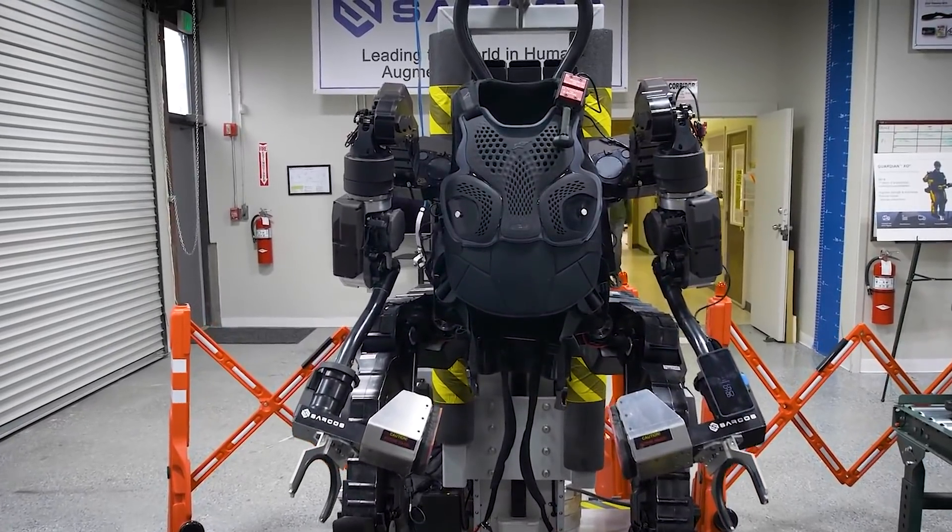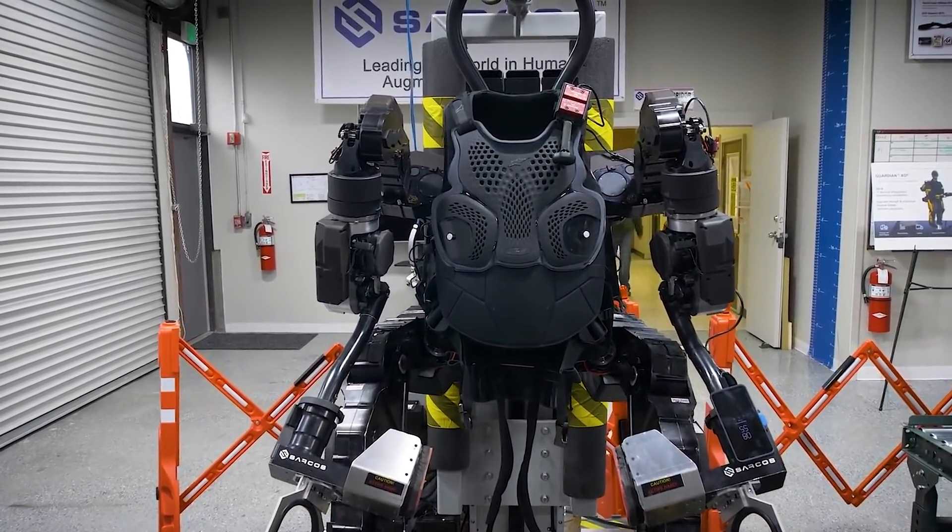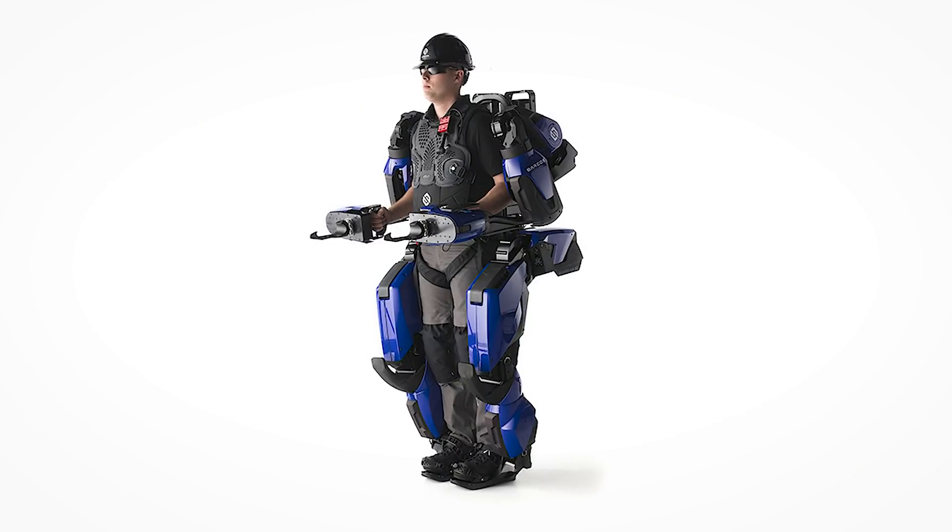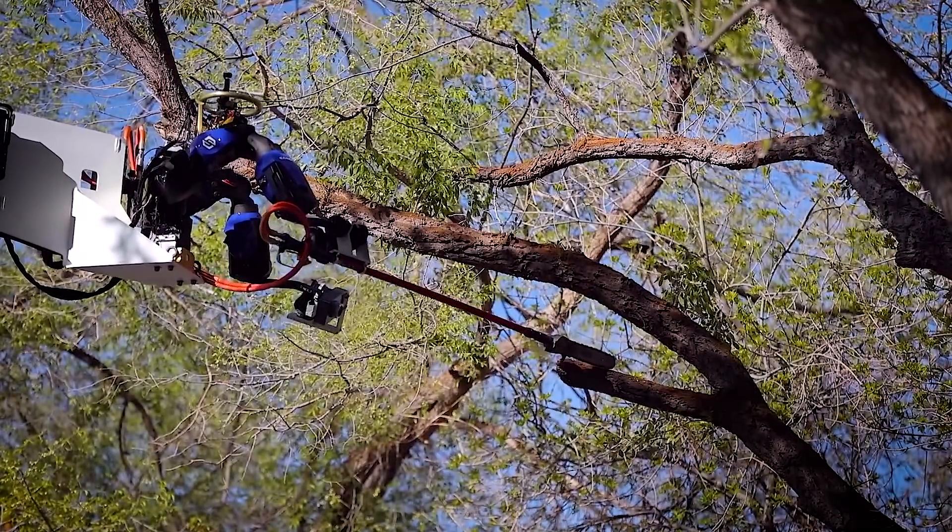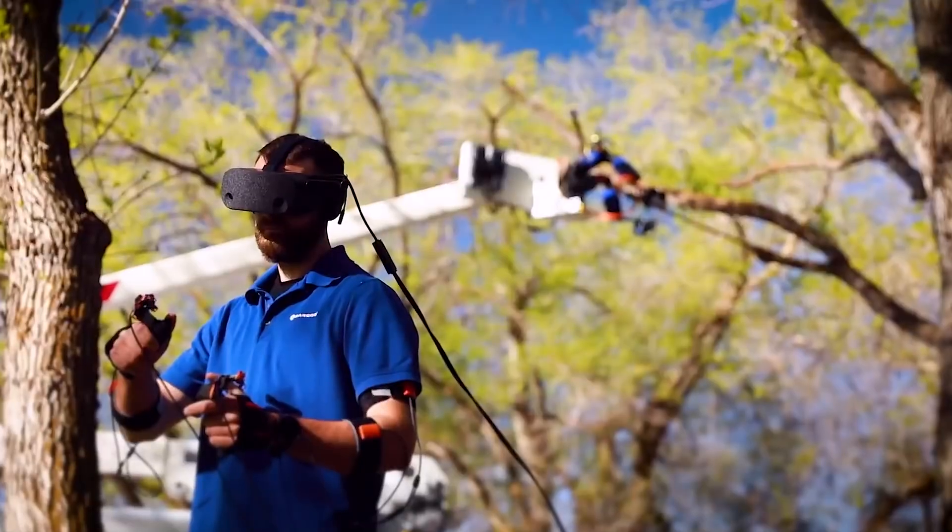The robot suits can be put on and taken off in under 30 seconds with no help. The Guardian XL serves as the foundation for the Guardian XD robot, which can now be operated from a safe distance without needing to be put on.